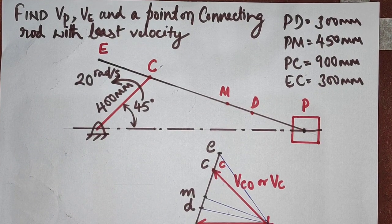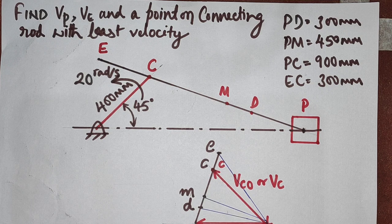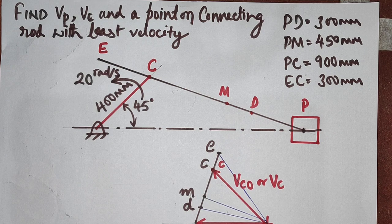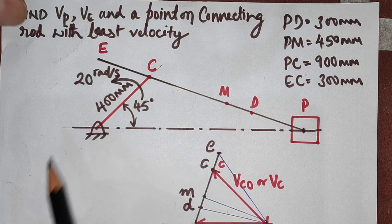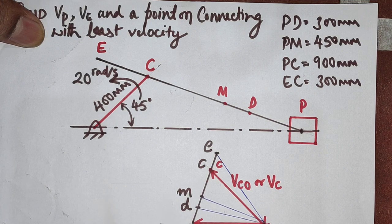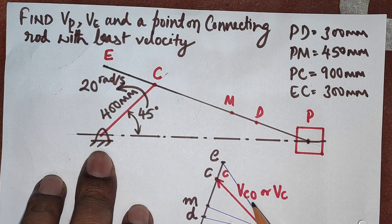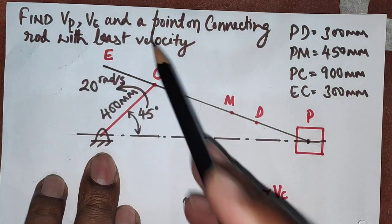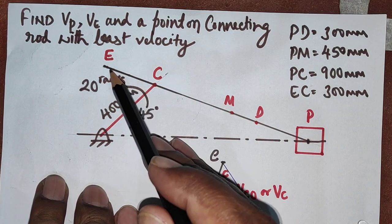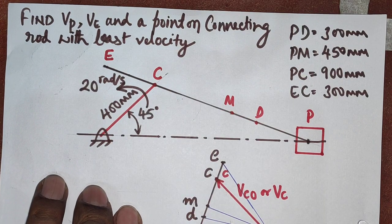Welcome to the lecture on Part 3 of velocity and acceleration diagrams. In the previous video we saw how to draw a velocity diagram for a simple slider crank mechanism. In this session we will slightly complicate the numerical by adding a few more points on the extension of the connecting rod and on the connecting rod itself, and also find the point on the connecting rod with the least velocity.